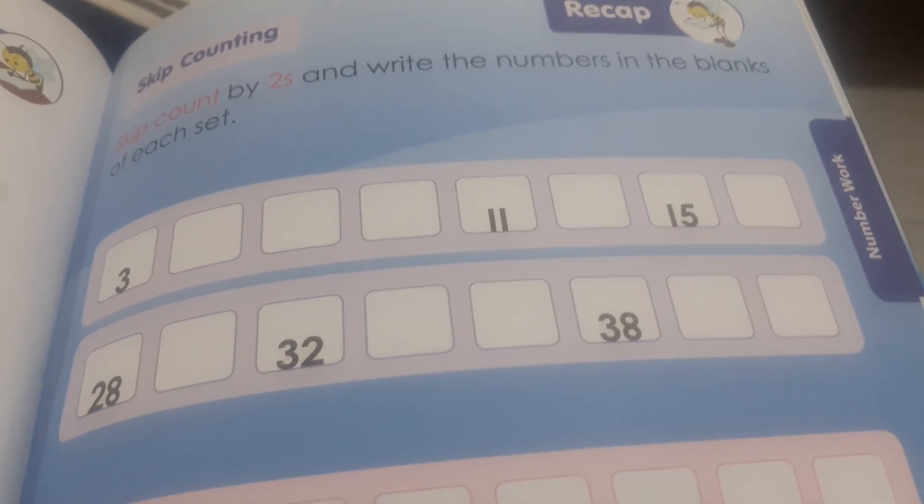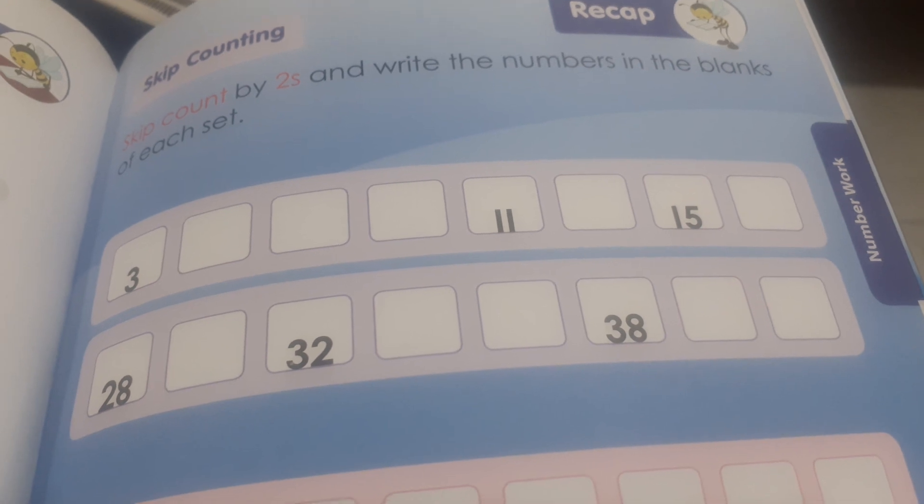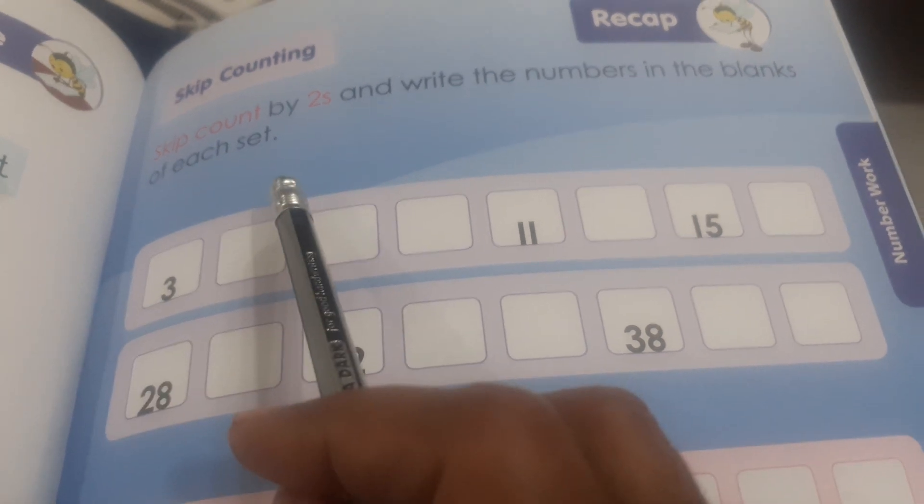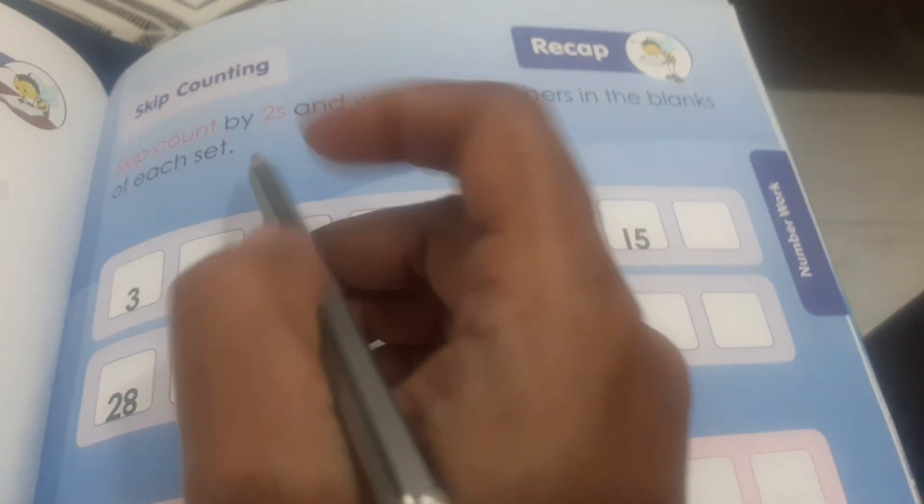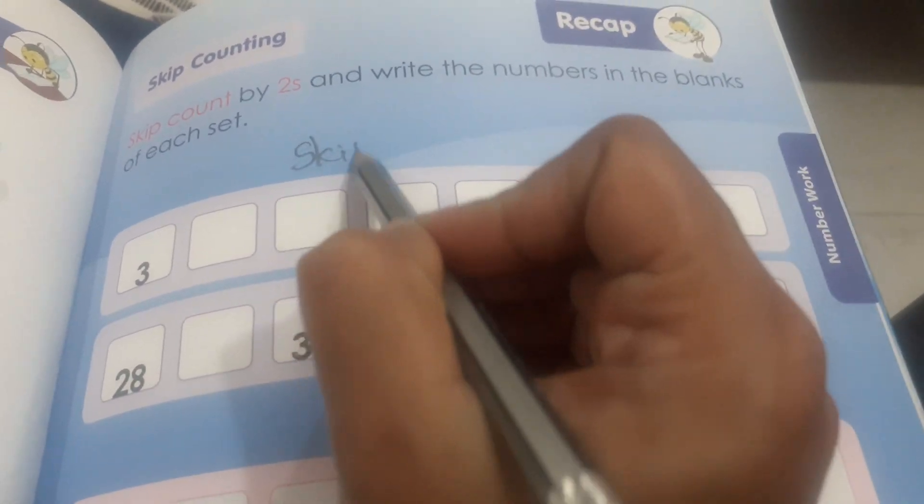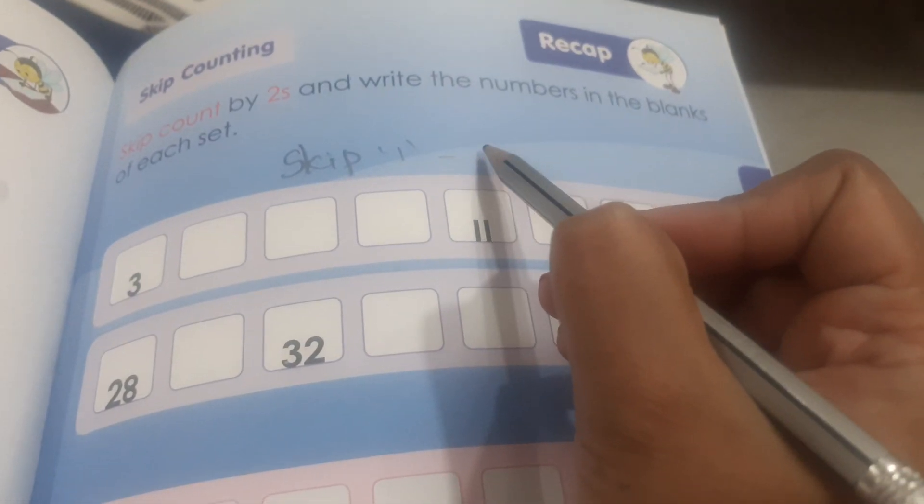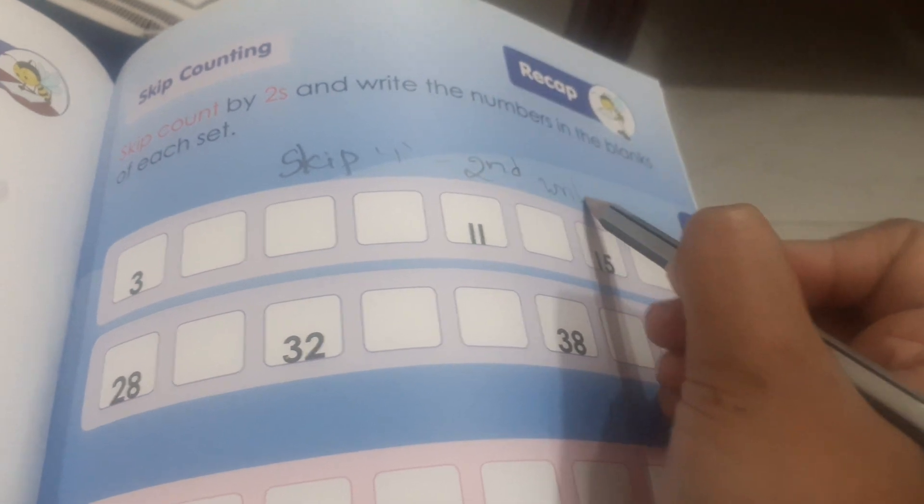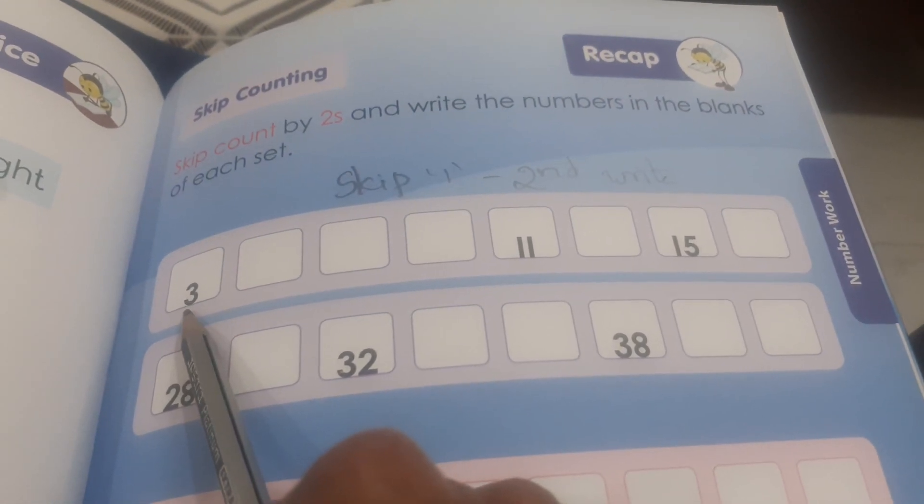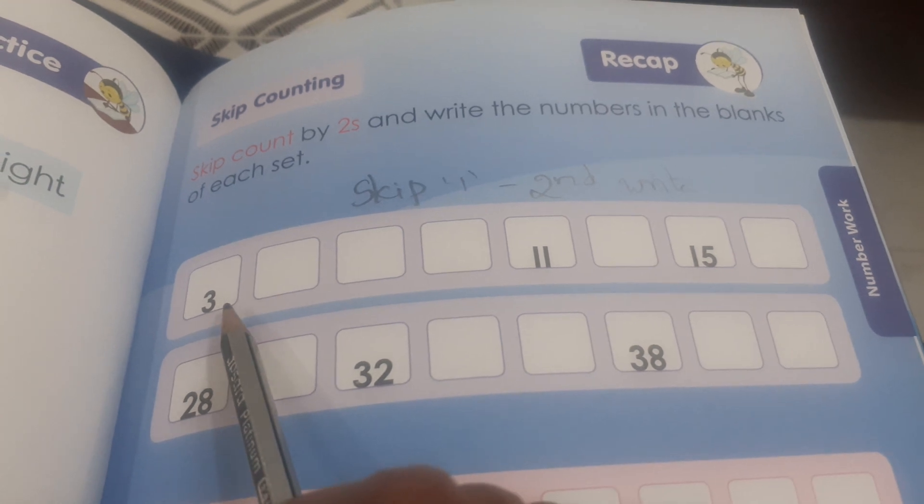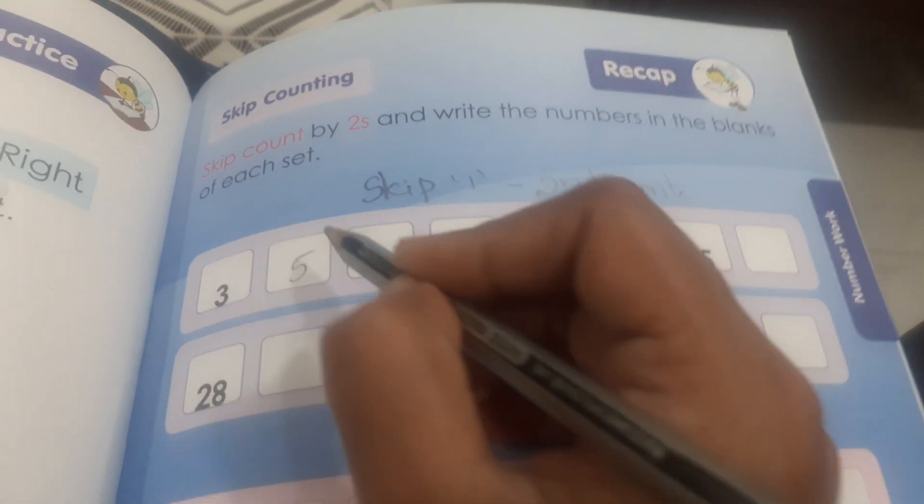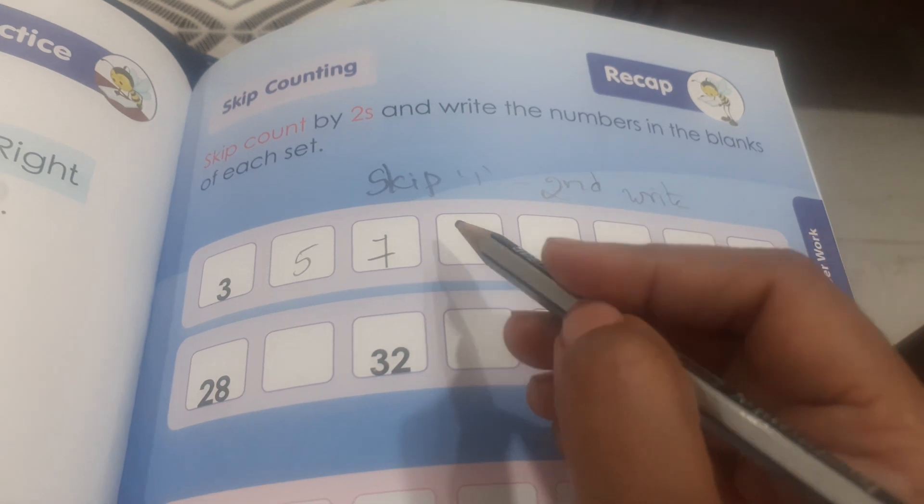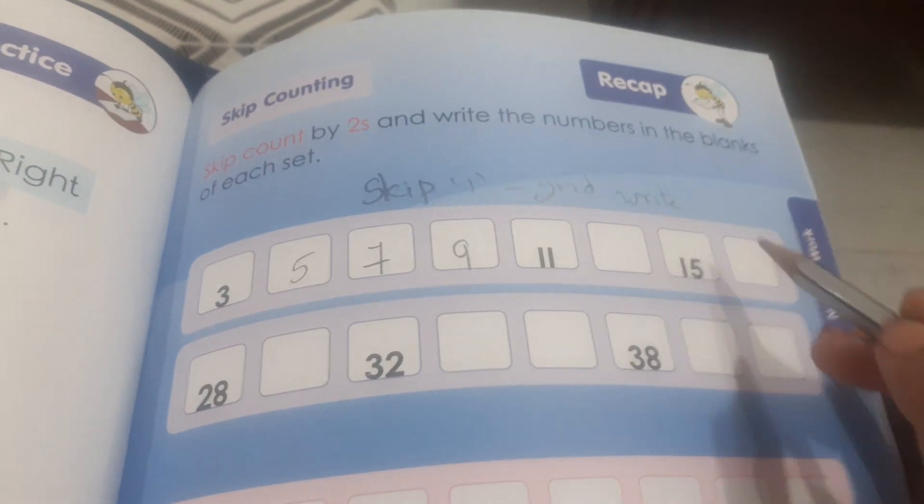Hi friends, today we will learn about skip counting by twos. Here, which number is there? Three. Skip count by two means skip one number, right? Next number, right? Second number. Here number three is there. You have to skip one number, means you have to skip four here and write five. Next, you have to skip six and write seven, leave eight and write nine, leave ten and write eleven, leave twelve and write thirteen, leave fifteen and write, leave sixteen and write seventeen.